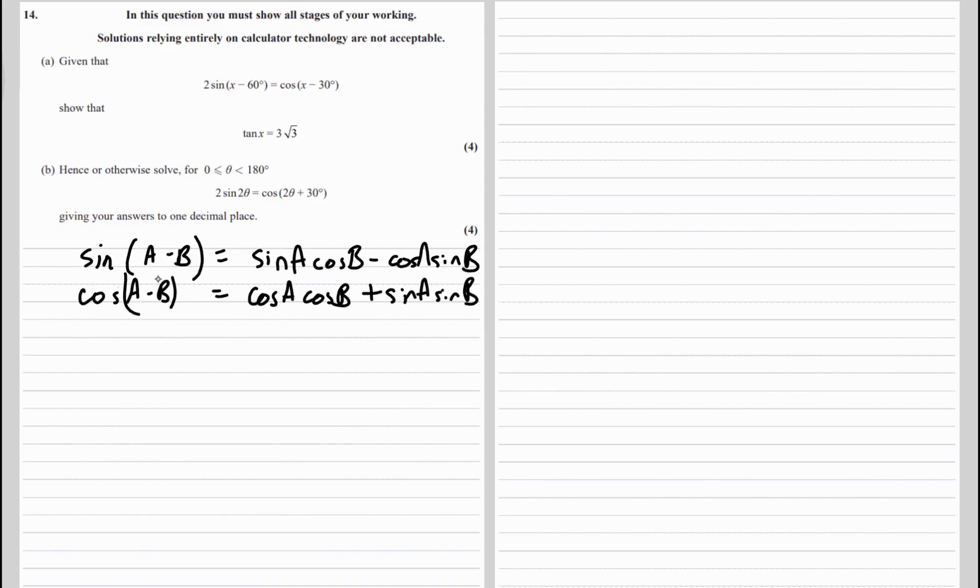So we've got 2 sine a minus b going to be 2 lots of sine a cos b, so sine x cos 60 minus cos x sine 60.